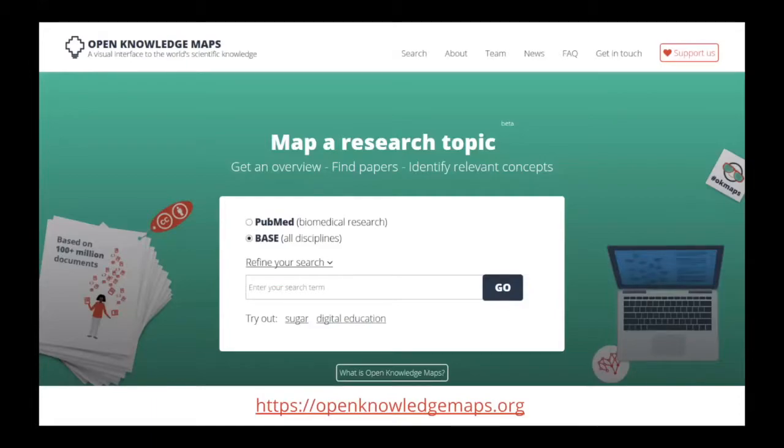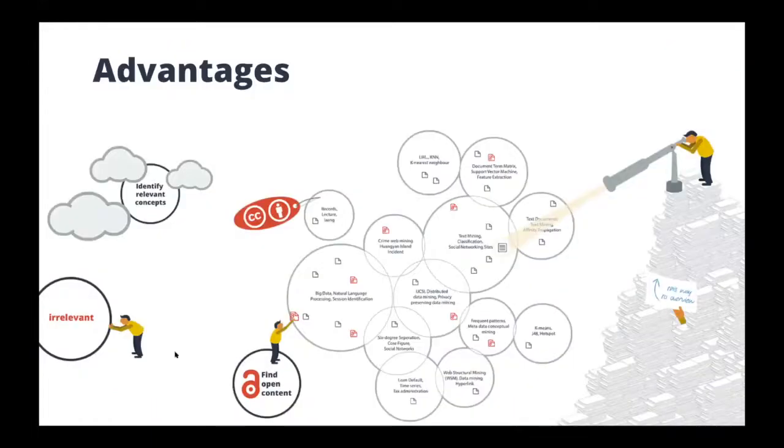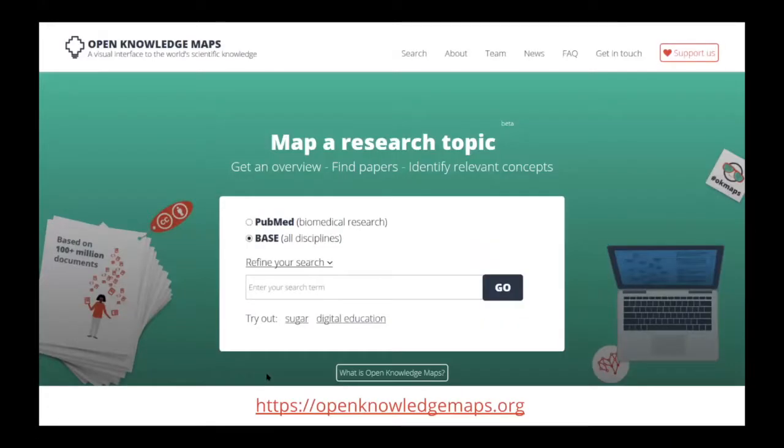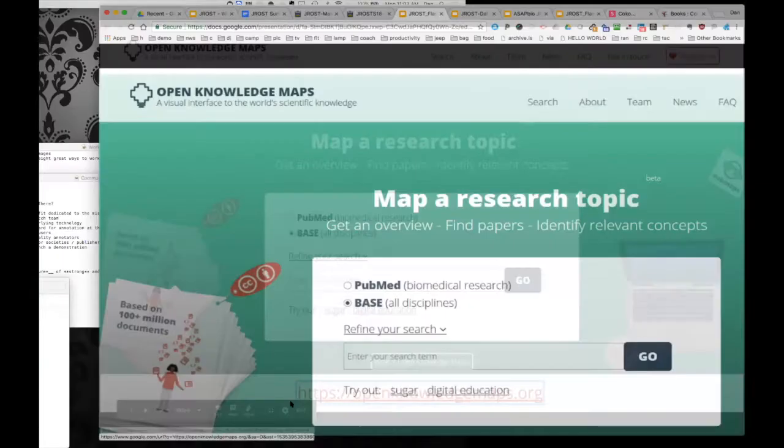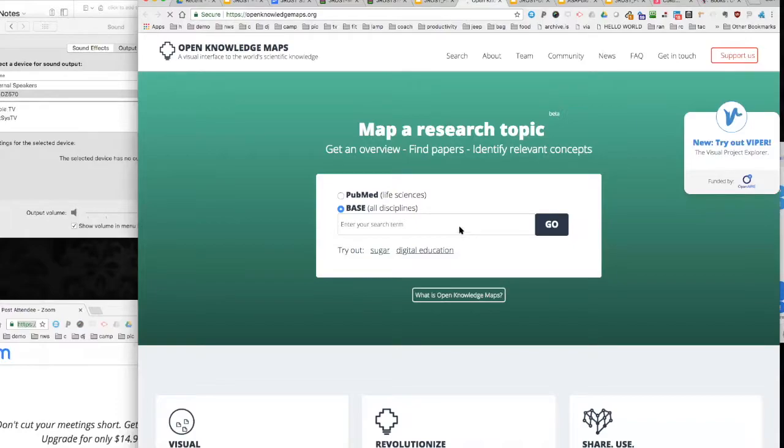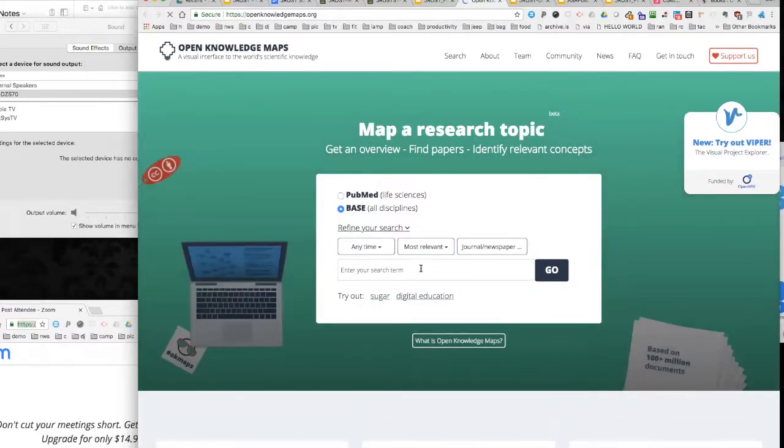This is the theory. In practice, you can go to our website openknowledgemaps.org and you can type in a field of interest and create your own knowledge map. For example, I'm going to do that for digital education.